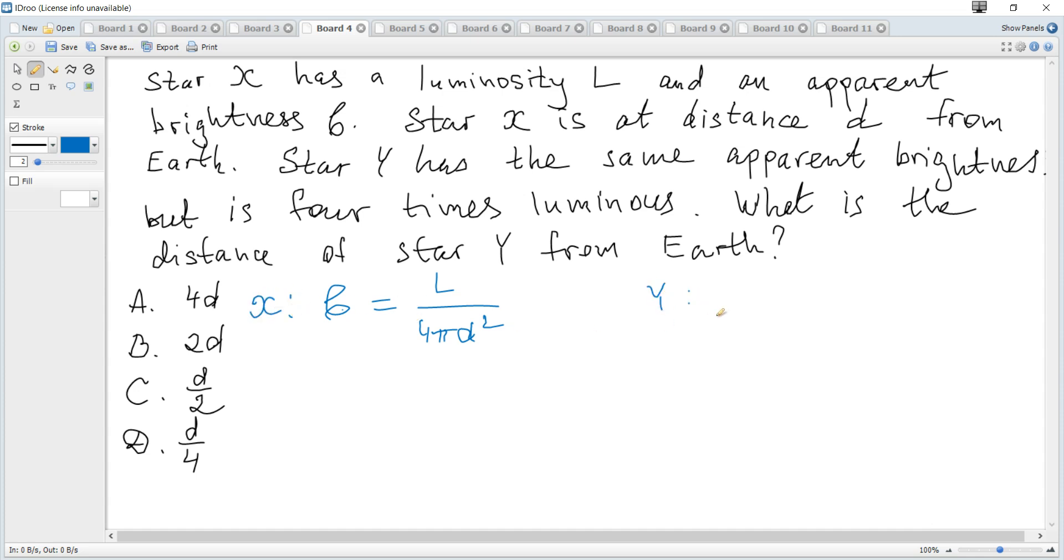For Y, brightness is the same but it's 4 times luminous. This means luminosity is 4 times larger and distance is required. Let's denote it X. Since B equals B, we can equate these two formulas as simultaneous equations and solve for X.